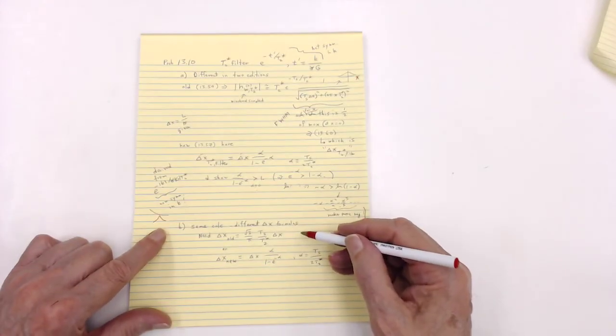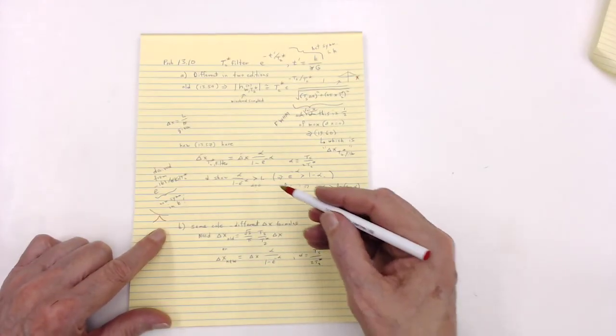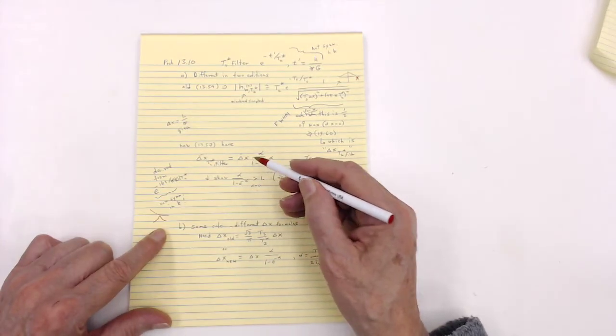Well, in part B, in the old edition, we got actually delta x less than the windowing and sampling MRI delta x.